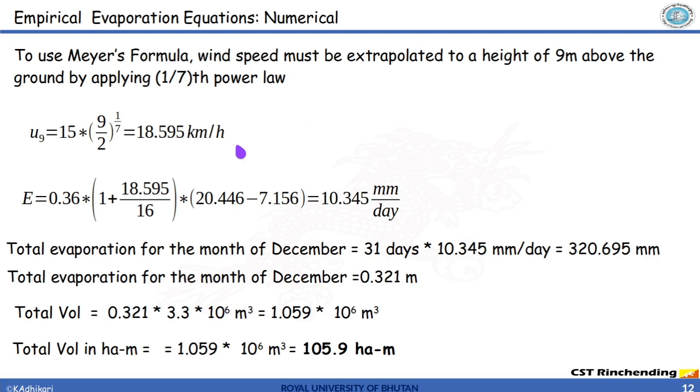Likewise, we use Mayer's formula to find the evaporation which is 0.36, the albedo coefficient for lake surface, times 1 plus velocity in kilometer per hour at 9 meter from the ground divided by 16 times the difference between the saturation vapor pressure and the actual vapor pressure. This gives us 10.345 mm per day.